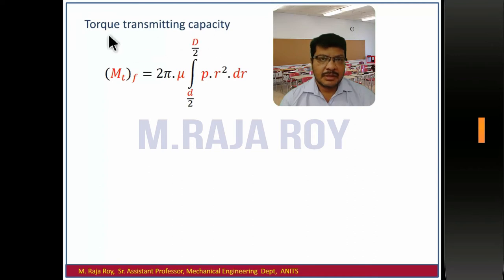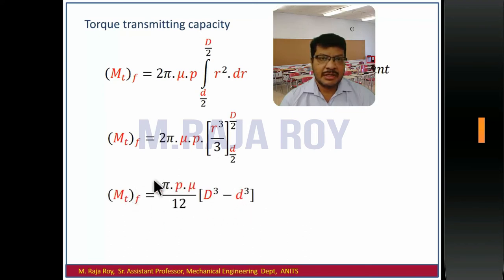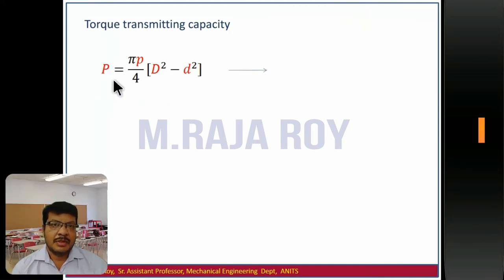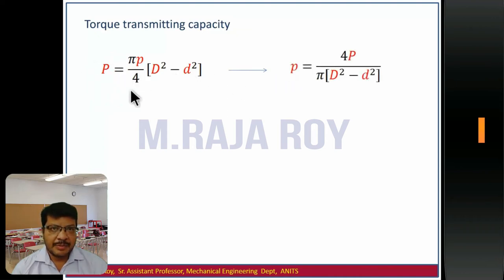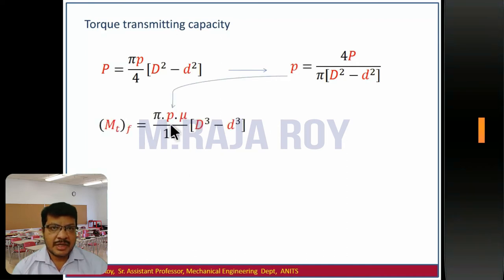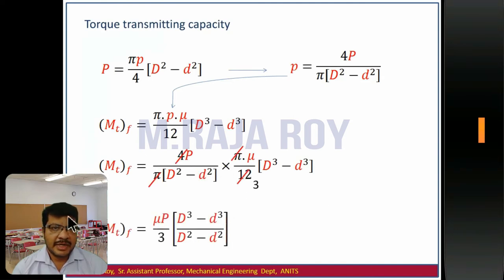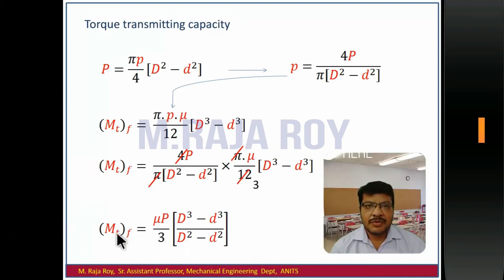Now finding the torque transmitting capacity: taking the torque equation, p is constant so take it out of the integration. Integrating r²·dr gives r³/3. Simplifying gives the final equation for torque transmitting capacity based on uniform pressure theory. Rearranging the operating force equation gives intensity of pressure p equal to 4P / [π(D² - d²)]. Substituting this into the torque equation and simplifying gives the final torque transmitting capacity equation in terms of operating force P.